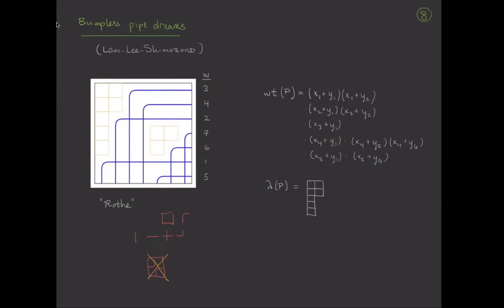And each one of these gets a weight, and the bumpless pipe dreams are very easy to assign a weight to. You just product over the blank boxes. So I've tried to line up this product so that roughly matches the order here. X1, X2, X3, etc. This would be Y1, Y2, etc. And so here I see X1 plus Y1, X1 plus Y2, X2 plus Y1, and so forth.